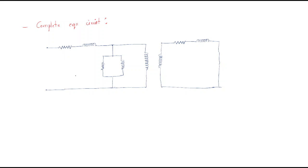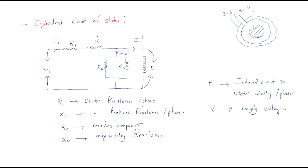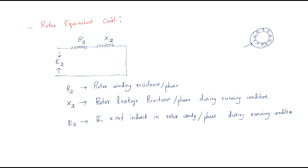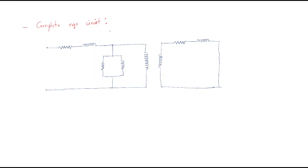We will now move on to the complete equivalent circuit, which means we should combine the stator circuit and the rotor circuit together to get the complete equivalent circuit. The stator has resistance R1, reactance X1, no-load resistance R0 and reactance X0, generating EMF E1. The secondary side generates EMF E2, and the rotor consists of resistance R2 and reactance X2.